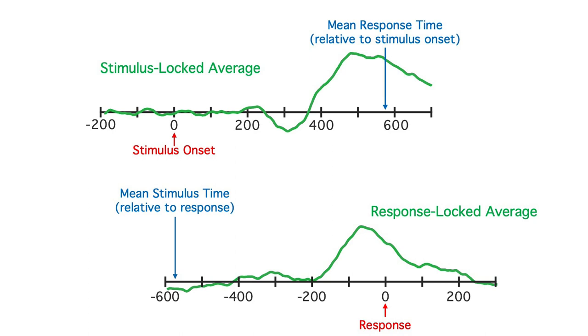If the response time were 570 milliseconds on every trial, the response-locked average would be identical to the stimulus-locked average, but shifted over by 576 milliseconds. However, there's a lot of trial-by-trial variability in response time. This variability smears out the response-related activity in the stimulus-locked average, and it smears out the stimulus-related activity in the response-locked average. So it can be useful to look at both stimulus-locked and response-locked averages.